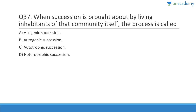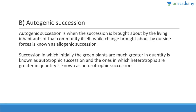Question 37: When succession is brought about by the living inhabitants of that community itself, the process is called autogenic succession. Auto means self, genic means generated. Autogenic succession is when the succession is brought about by the living inhabitants themselves, while change brought about by outside forces is called allogenic succession. Succession in which green plants initially dominate is called autotrophic succession, and where heterotrophs dominate is called heterotrophic succession.